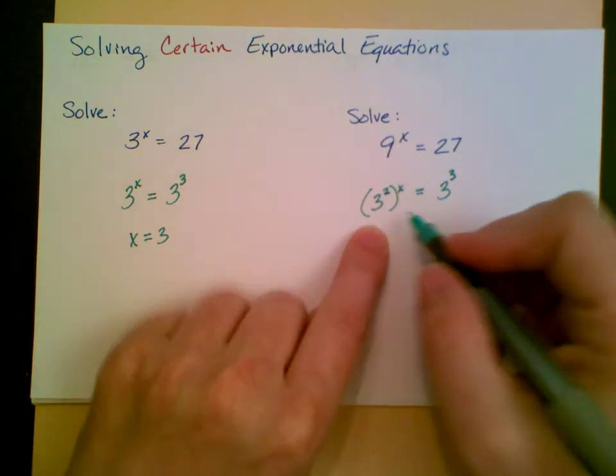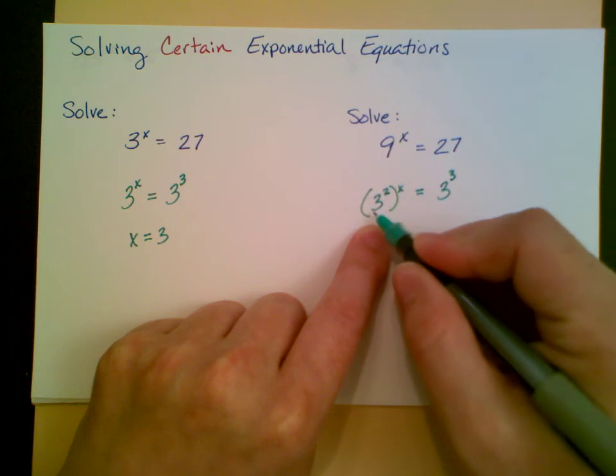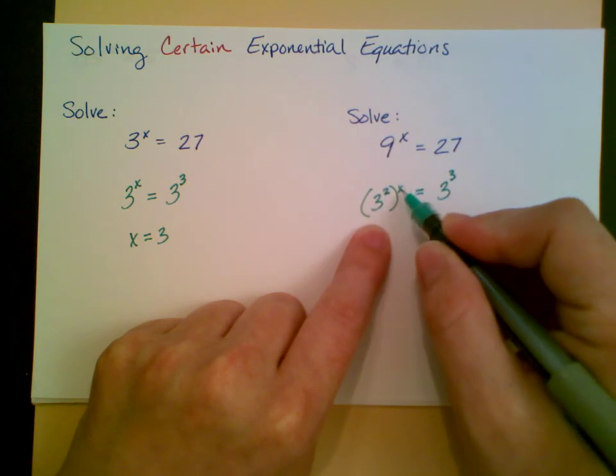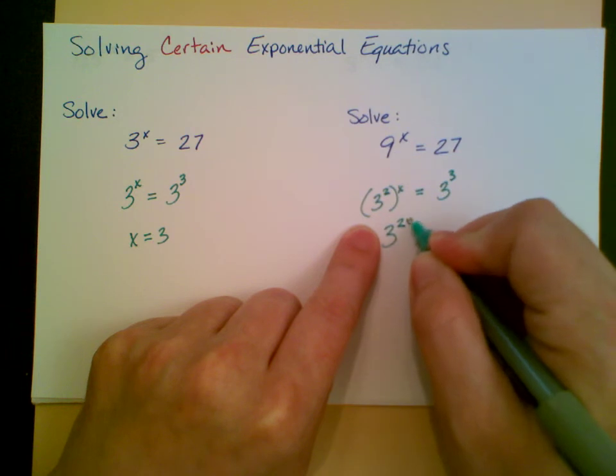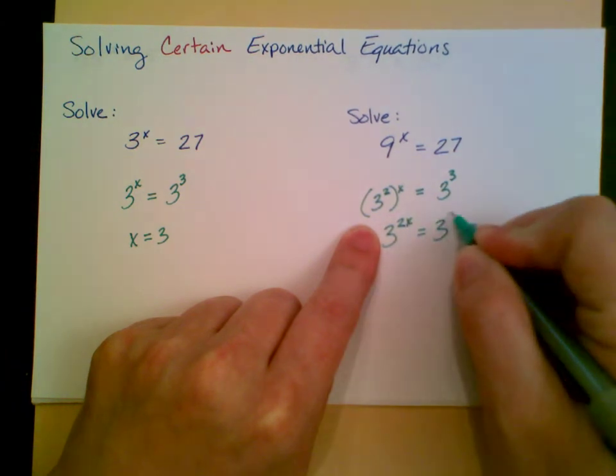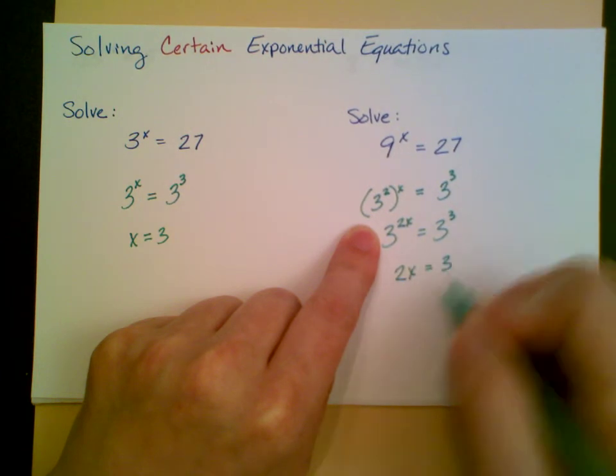One of our exponent rules is that when I'm raising something in exponential notation to another exponent, I multiply the exponents together. So that gives me 3 to the 2x equals 3 to the 3, so I get 2x equals 3, and so x is equal to 3 halves.